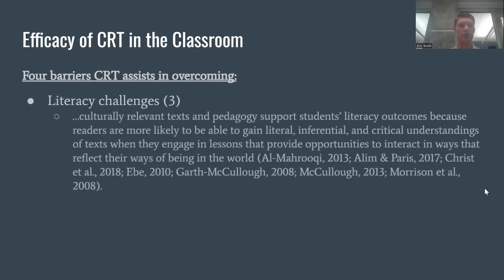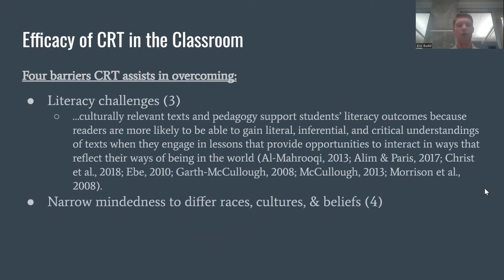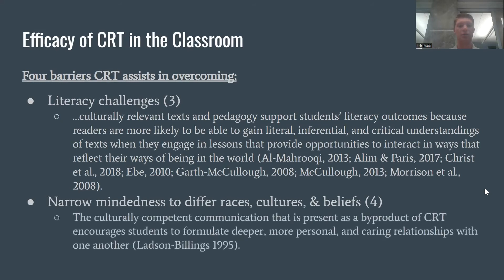The third and fourth barriers are literacy challenges and narrow-mindedness to different cultures, races, and beliefs. Culturally relevant texts provide students the ability to gain literal, inferential, and critical understandings of text when they engage in lessons that reflect their ways of being in the world. For vocabulary, students in culturally diverse schools have different dialects and dictions — giving them texts that self-affirm their vocabulary systems helps overcome literacy challenges. For narrow-mindedness, providing that window towards other students creates a more inclusive classroom environment.